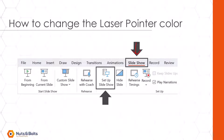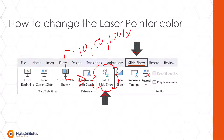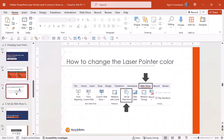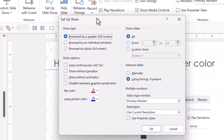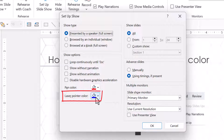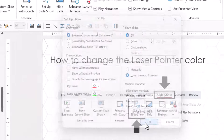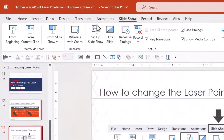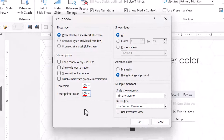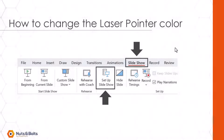To change the laser pointer color, come to the Slideshow tab and find the Setup Slideshow command. Here you can make a number of options about how your presentation runs, including changing the laser pointer color. Let's change it from blue to green and click OK. I'll start the slideshow and use control and drag to see the green laser pointer color. If I don't like it, I'll go back to the Slideshow tab, open Setup Slideshow, and change the laser pointer back to the default red. Control click and drag — my favorite way — shows the red laser pointer color.